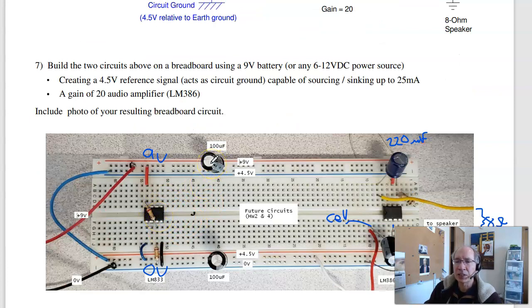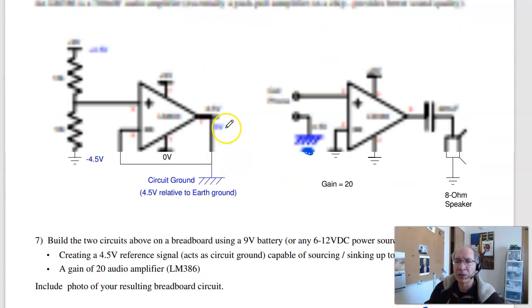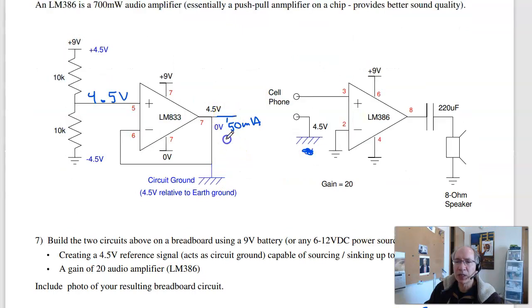And these are just 100 microfarad capacitors. They go between the 4.5 volts and earth ground. And another one goes between 4.5 volts and 9 volts. Helps keep the DC voltage, the 4.5 volt reference, more constant.